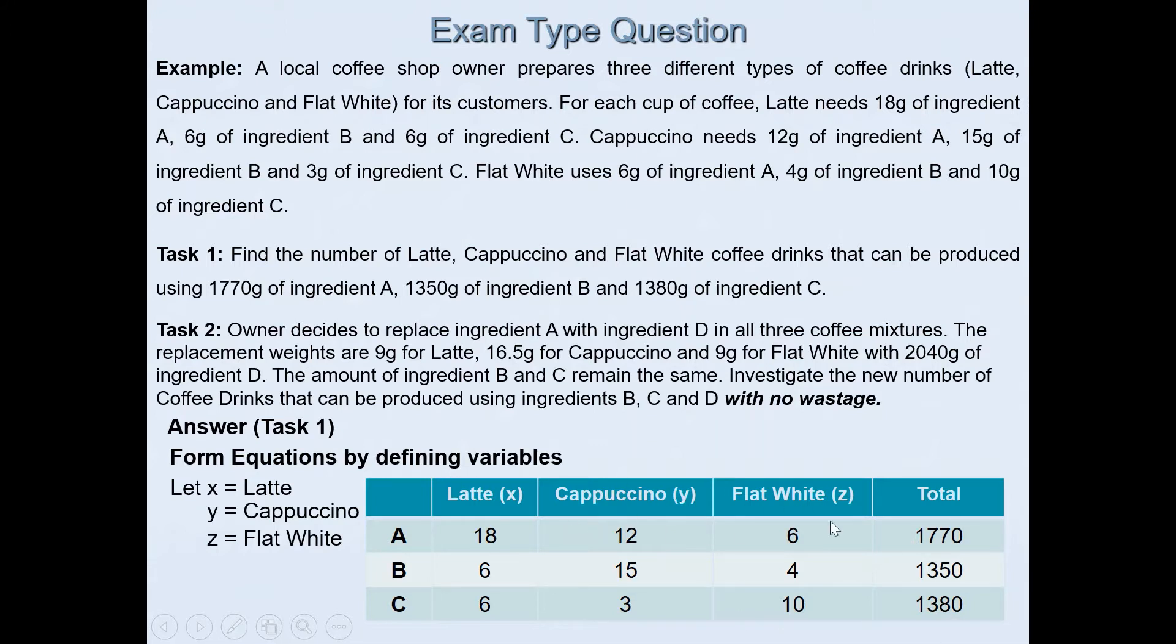It's not compulsory, but here you can clearly see the total number of ingredients that were available: ingredients A, B, and C, and the three different types of drinks that the owner is preparing. It becomes easier for us to use this table to form equations. For example, if I'm looking at ingredient A, I can then know that 18x plus 12y plus 6z will give you the total that was available for ingredient A, which is mentioned in task 1. Likewise we can form equations for B and C.